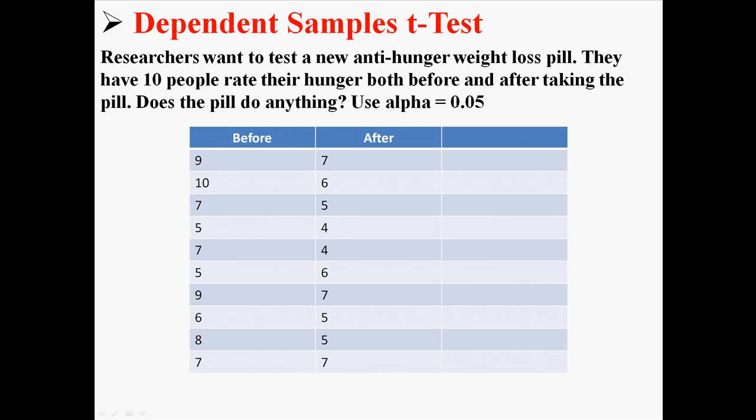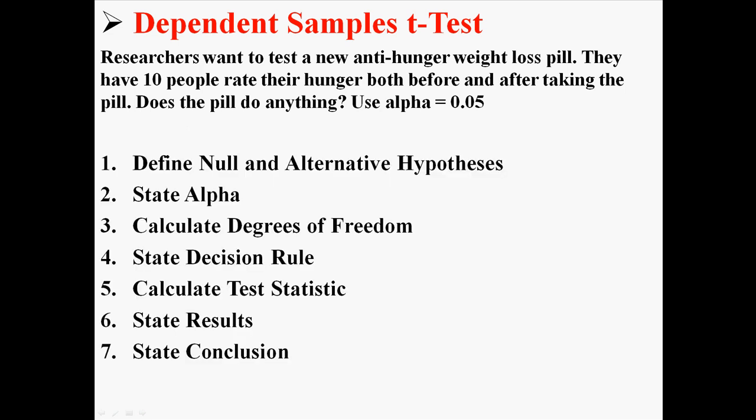This is a dependent sample because we're measuring the same people before and after — that's why we're doing a dependent samples t-test. This t-test is going to have seven steps: state our hypotheses, state alpha, calculate the degrees of freedom, state the decision rule, calculate the test statistic, and then state our results and conclusion.